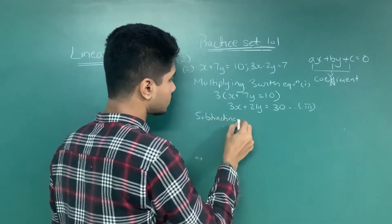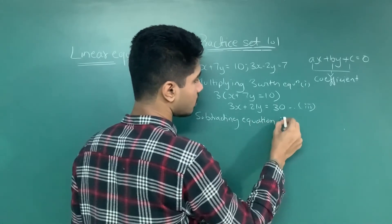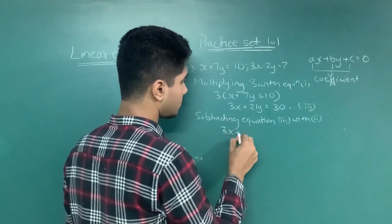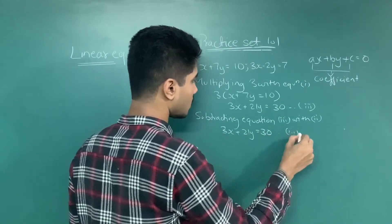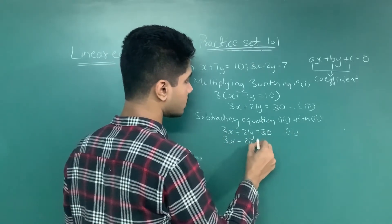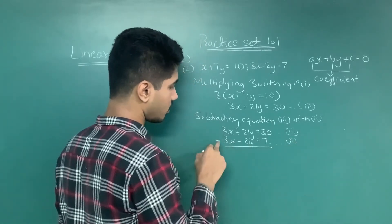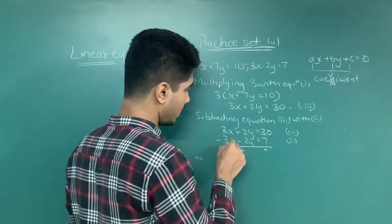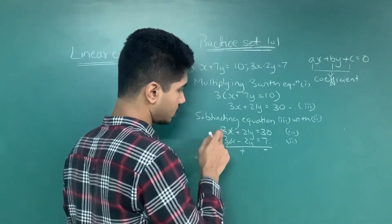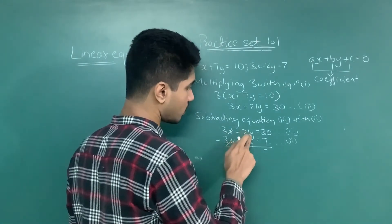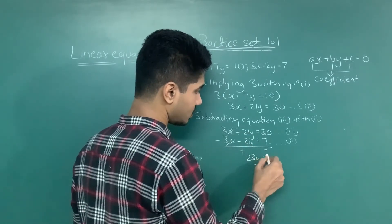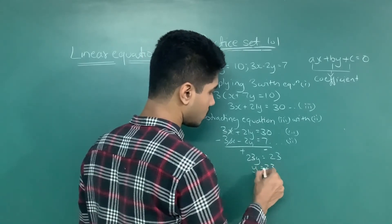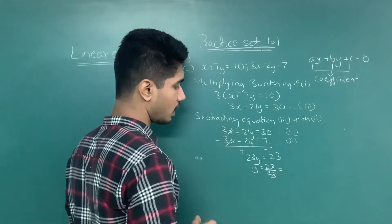Subtracting equation 3 with equation 2: 3X plus 21Y equals 30, and 3X minus 2Y equals 7. The signs of equation 2 are reversed, so minus becomes plus. 3X and 3X cancel. 21Y plus 2Y gives 23Y, and 30 minus 7 gives 23. So 23Y equals 23, and dividing gives Y equals 1.